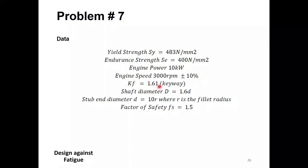The fatigue stress concentration factor for the keyway is given as 1.61. The larger shaft diameter D equals 1.6 times the smaller diameter d, and the smaller diameter d equals 10 times the fillet radius R. These proportions are given, along with a factor of safety of 1.5. We must find the shaft diameter for infinite life.